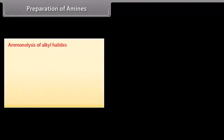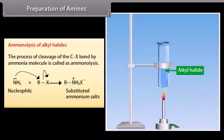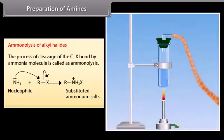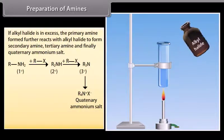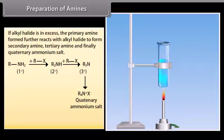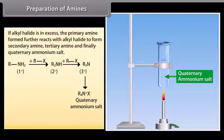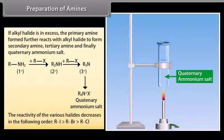Ammonolysis of alkyl halides: If alkyl halide is in excess, the primary amine formed further reacts with alkyl halide to form secondary amine, tertiary amine, and finally a quaternary ammonium salt. The reactivity of the various halides decreases in the order: RI > RBr > RCl.